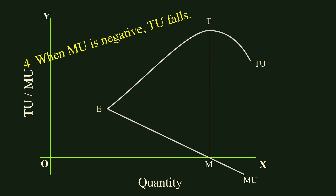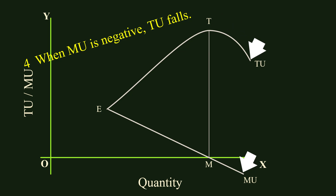Fourth relation: when Marginal Utility is negative, Total Utility falls. In the segment of the Marginal Utility curve that lies to the right of point M, Marginal Utility is negative. That segment of the Total Utility curve which lies to the right of T slopes downwards — Total Utility in this segment is falling.